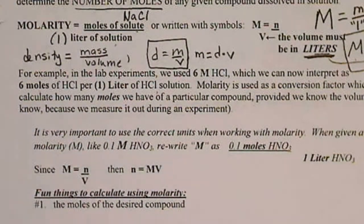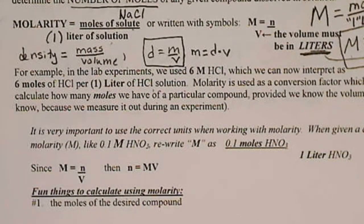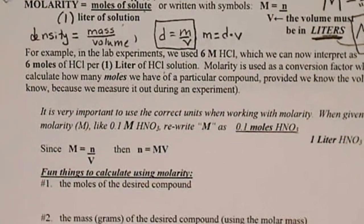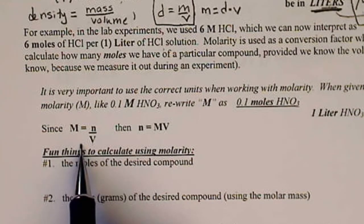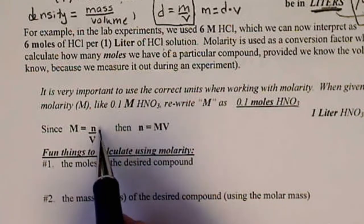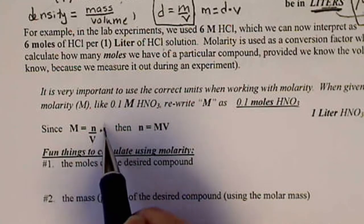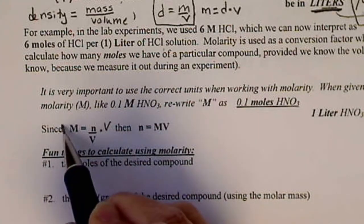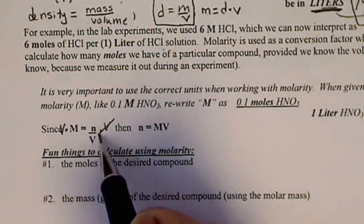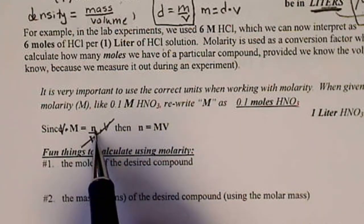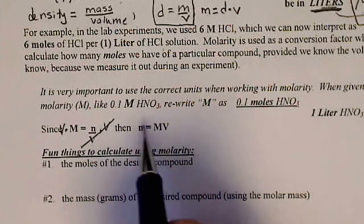The most common thing that we're going to do is solve for moles. So what I've done is I've rewritten the algebraic definition here. And then to solve for n, we would multiply both sides of the equation by V. And then our volumes cancel. So n is equal to molarity times volume.